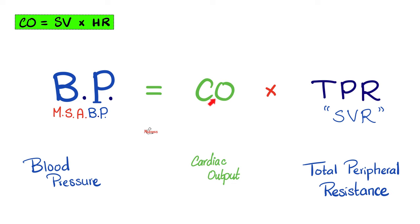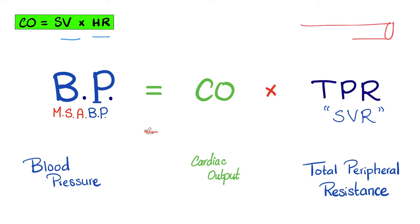Cardiac output is important because it affects your blood pressure — specifically the mean average systemic arterial blood pressure in arteries like the radial artery. Mean arterial pressure equals cardiac output times total peripheral resistance (TPR). Resistance is the opposite of radius, and it's radius raised to the fourth power. The lower the radius, the greater the resistance.